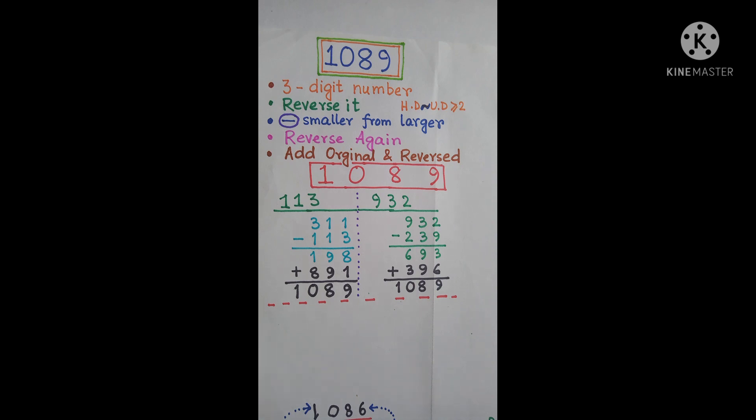Consider a 3-digit number with the property that the hundreds digit and the units digit have a difference that must be more than or equal to 2. Make sure of this thing. Then reverse it. We will reverse it.